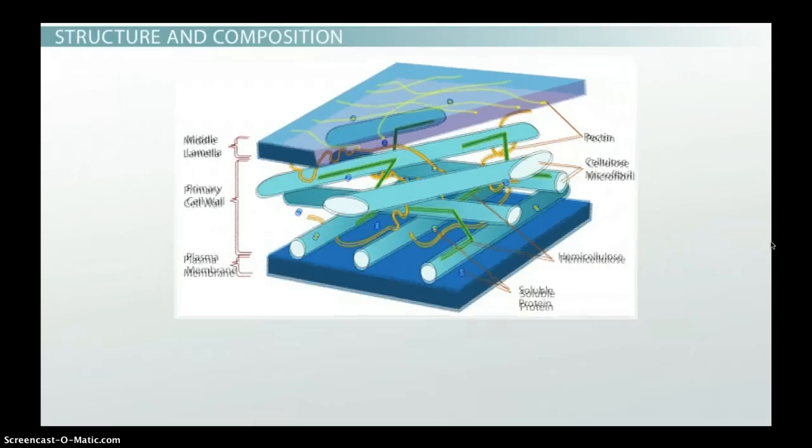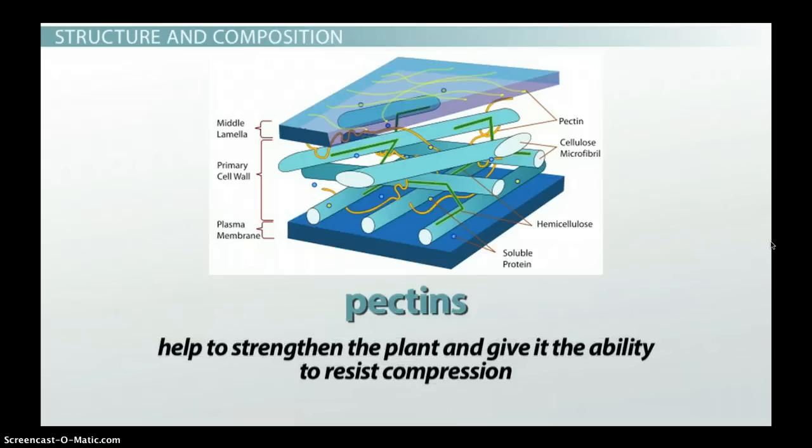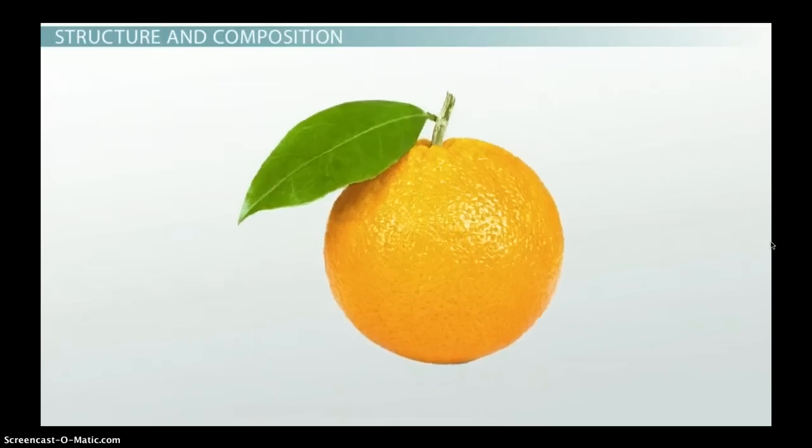The top layer is the strangely named middle lamella. This outer layer is shared by neighboring cells and it connects the cells together to form a strong structure. It is also very flexible. The middle lamella is rich in pectins, which help to strengthen the plant and give it the ability to resist compression. They also contain enzymes that help to break down the cell wall, allowing the plant to change its structure. This process is important when fruit is ripening.